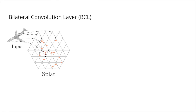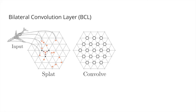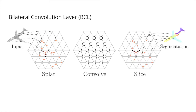BCL has three processing steps. In the first step, splatting, BCL projects the input features onto the grid defined by the lattice features via barycentric interpolation. Following earlier work, we use a permutohedral lattice instead of a regular Euclidean grid for efficiency purposes. Once the input points are projected onto the lattice, BCL performs standard convolutions on the interpolated signal with learnable filters. In the last step, slicing, the filtered signal is mapped back to the input points via barycentric interpolation.